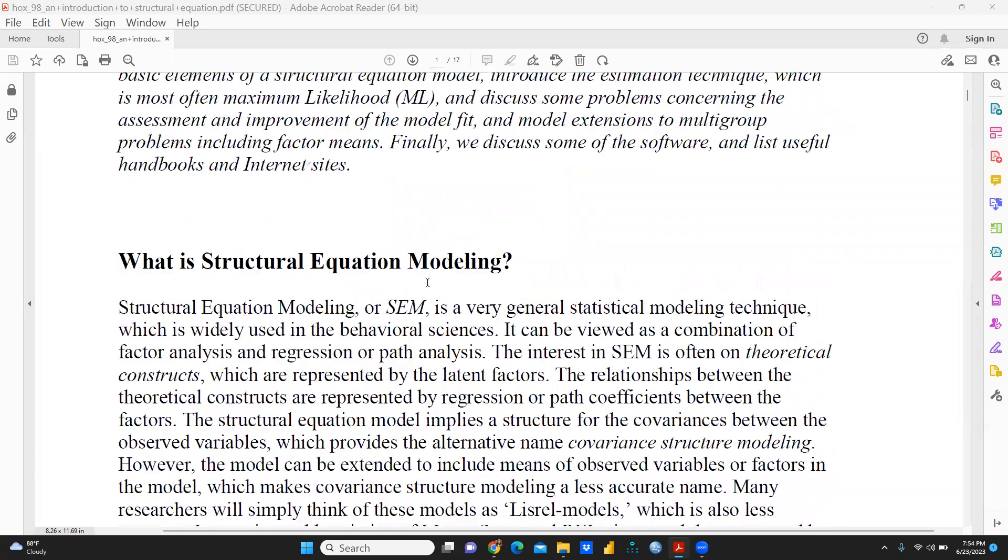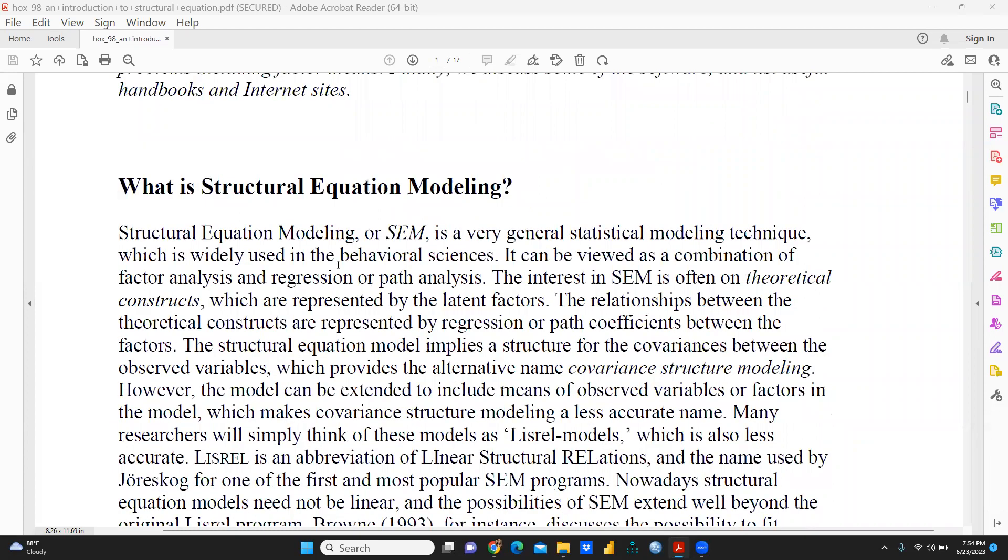Here's how structural equation modeling came about. Another name that came into practice is covariance structure modeling. So first, we'll understand what structural equation modeling means. It's a very general statistical modeling technique widely used in the behavioral sciences, and it's a combination of factor analysis and regression, or what we can call path analysis.